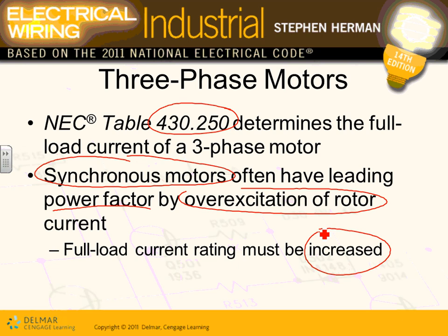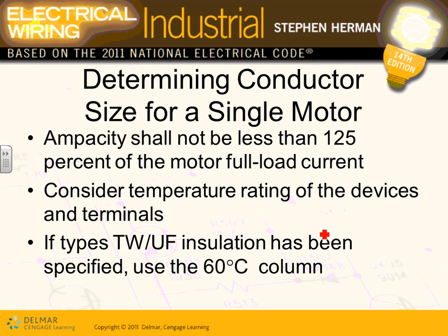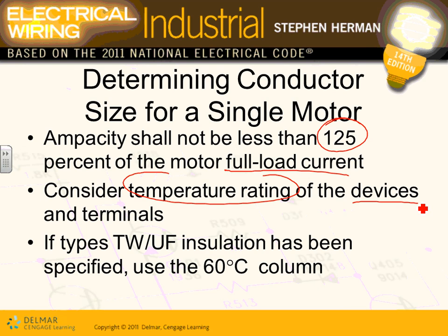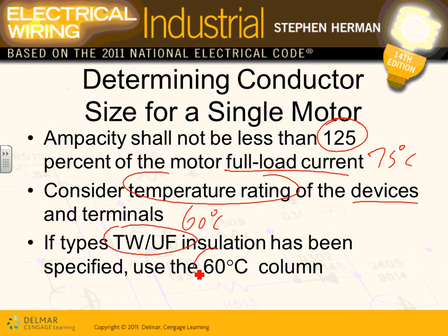When determining conductor size current, multiply the full load current by 125%. You also need to consider the temperature rating of the devices — typically the 75°C column. If you're using 60°C-rated conductors, you use the 60°C column. For engineers, most equipment is rated for 75°C.